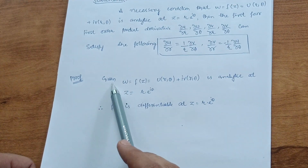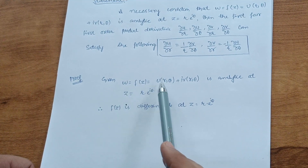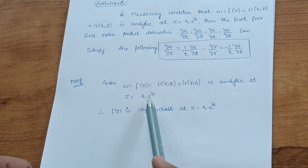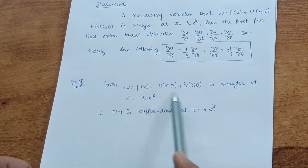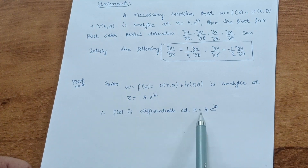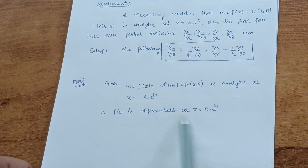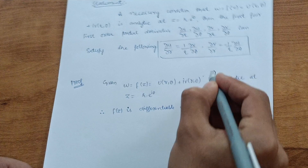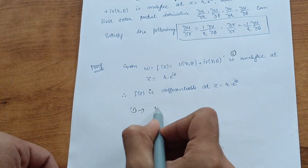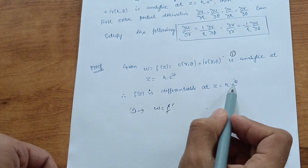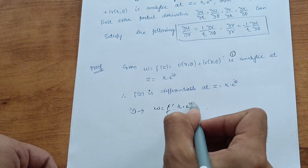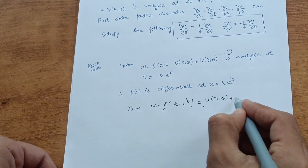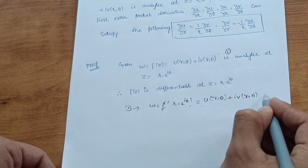Given data: w = f(z) = u(r, θ) + iv(r, θ) is analytic at z = r·e^(iθ). Since the function is analytic at this variable, it is differentiable. Therefore f(z) is differentiable at z = r·e^(iθ). We can rewrite the first equation as: f(r·e^(iθ)) = u(r, θ) + iv(r, θ). This is equation number two.